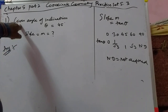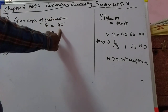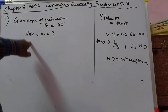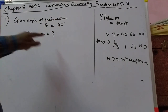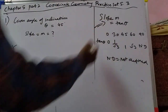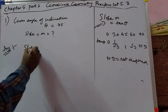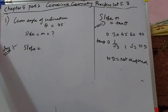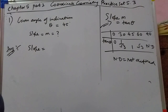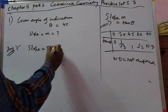First problem: angle of inclination is 45 degrees. You have to find the slope. Write this formula.